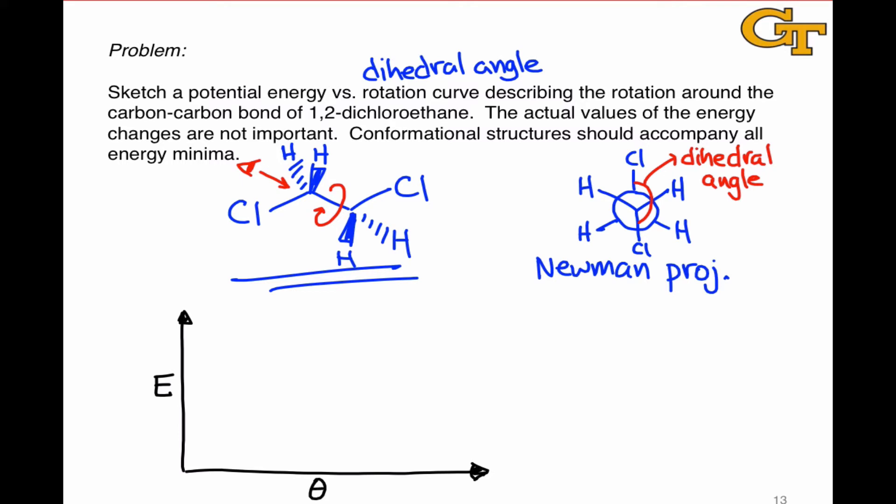In the structure we've drawn initially, the dihedral angle between the two carbon-chlorine bonds is clearly 180 degrees. Where we want to really focus our attention are places where the energy is either at a maximum or at a minimum. That occurs when the bonds in front and in back are either completely eclipsed—in other words, completely blocking each other when we look down the Newman projection—or completely staggered, where they're alternating and not blocking one another at all. This happens every 60 degrees. I'm going to mark off in 60 degree increments the different angles we'll be interested in: 180, 120, 60, and 0.